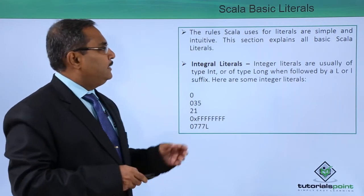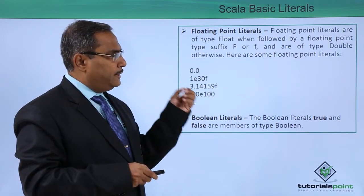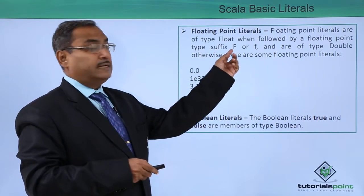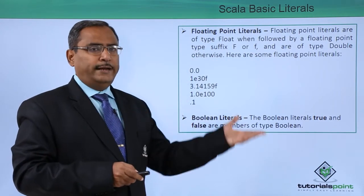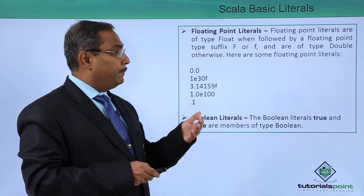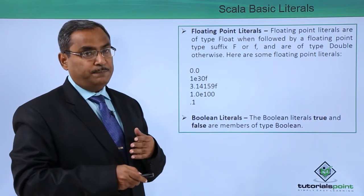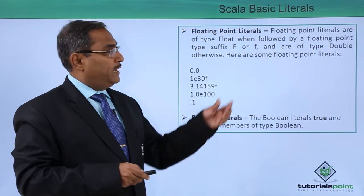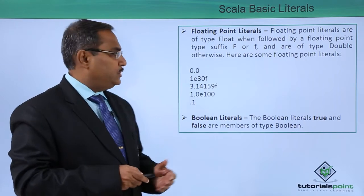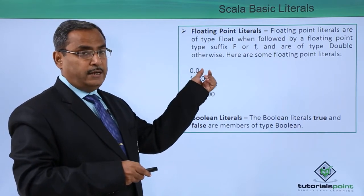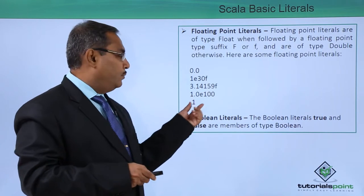Now let's go to the next literal type: floating point literals. Floating point literals are of the type float when followed by a floating point type suffix — capital F or small f — and of type double otherwise. Floating point numbers can be expressed in two formats: single precision and double precision. Single precision is expressed with small f or capital F; otherwise it is treated as double precision. For example, 0.0 is a double because no f suffix is mentioned.